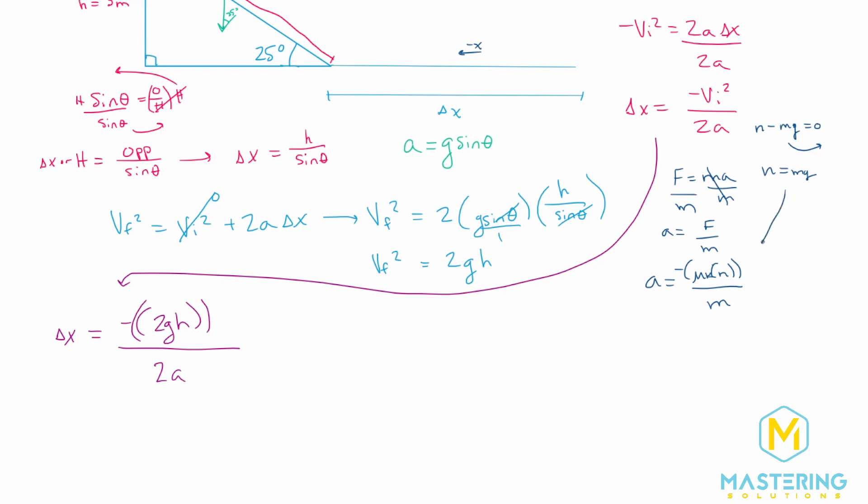So we can put that in down here for n. So now we have acceleration is negative mu sub k times mg divided by m. So the mass will cancel. And acceleration is simply equal to the negative mu sub k times gravity.